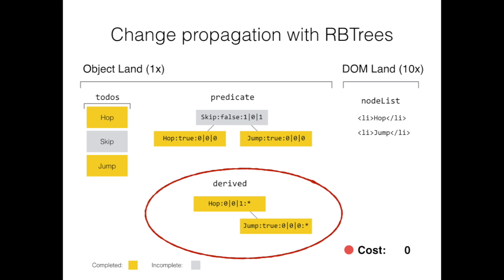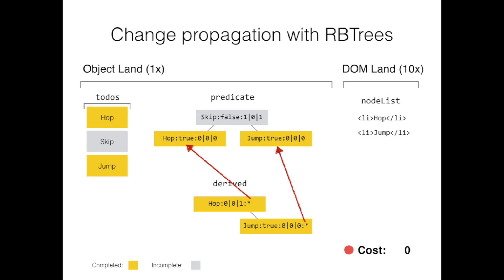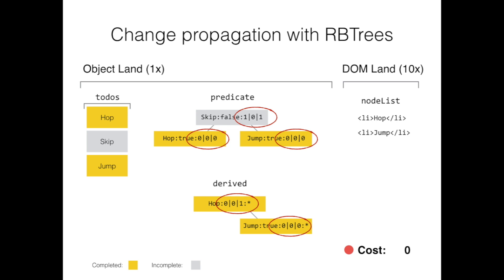This is the most complex part of the algorithm. Notice that jump in the derived tree is the second item, but if skip gets added, jump needs to become the third item in the derived tree. To enable derived nodes to look up their index, each derived node has a reference to their sister node in the predicate tree — this is what the asterisk symbolizes. Finally, to quickly calculate the index of any node within its own tree, we store a left count, right count, and gap count on every node.